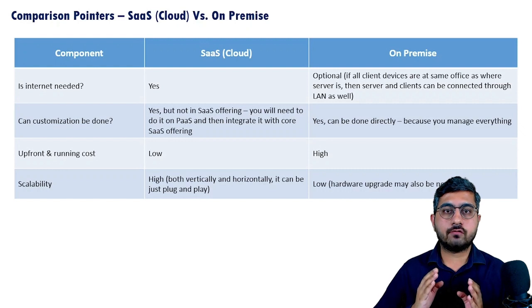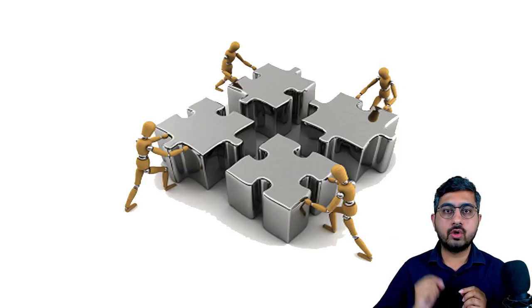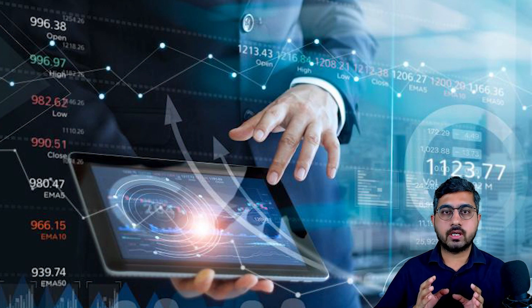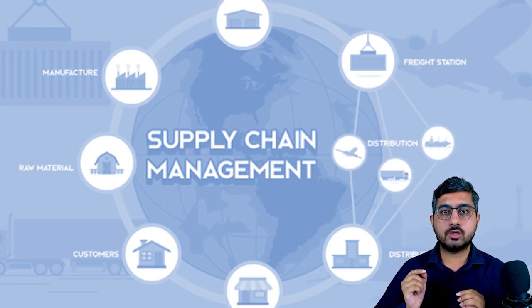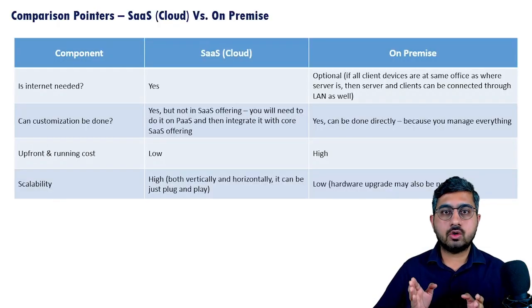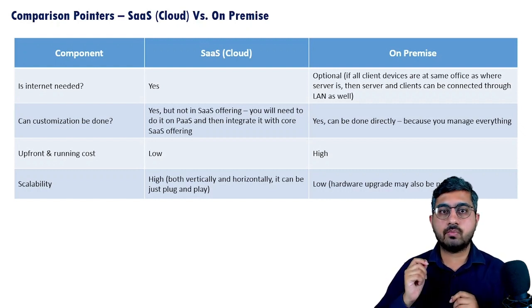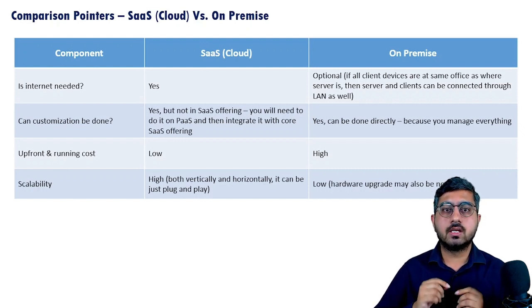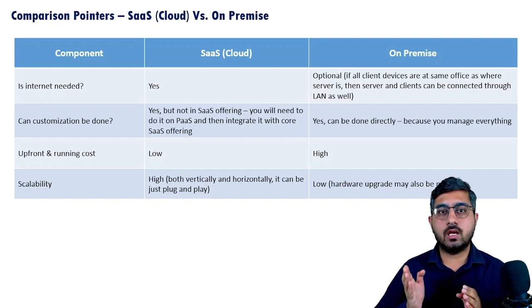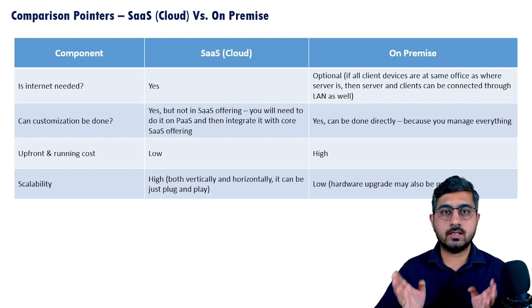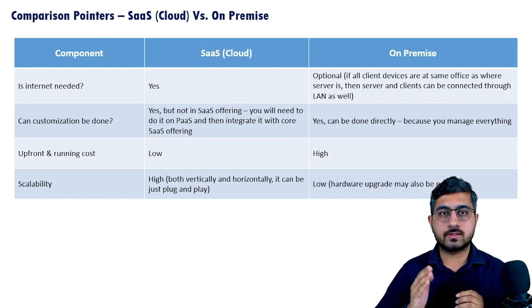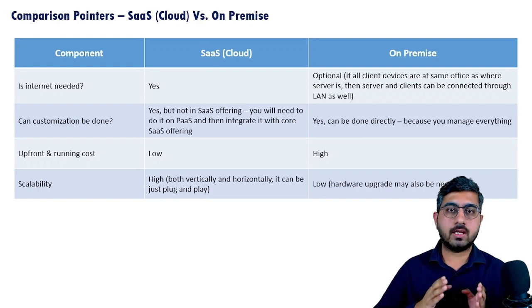This brings us to scalability. In case of SaaS, software vendors follow a modular approach. For example, if a company currently needs only a financial application but two years later will need a supply chain management application, they don't need to procure those licenses upfront. They can simply add the supply chain module when needed. Similarly, in terms of number of users, it is highly scalable — you might start with licenses for 10 users and scale up to 100 users as your organization grows.